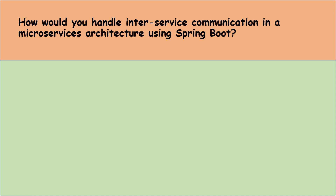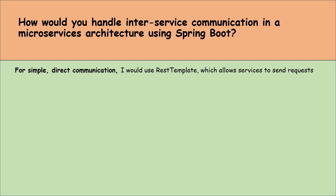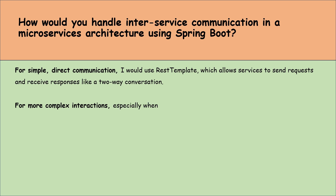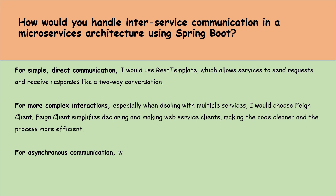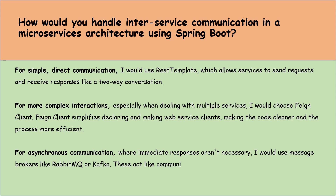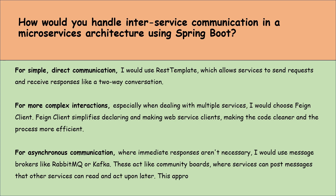How would you handle inter-service communication in a microservice architecture using Spring Boot? For simple direct communication, I would use REST template, which allows services to send requests and receive responses like a two-way conversation. For more complex interactions, especially when dealing with multiple services, I would choose FeignClient — it simplifies declaring and makes the code cleaner and more efficient. For asynchronous communication where immediate responses are not necessary, I would use message brokers like RabbitMQ or Kafka. These act like community boards where services can post messages that other services can read and act upon later, ensuring a robust, flexible communication system between microservices.